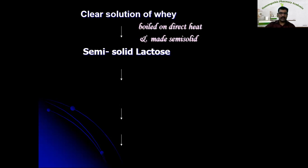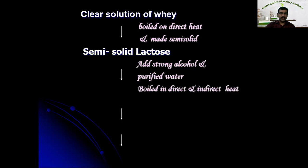To the semi-solid lactose, we add strong alcohol and purified water for purification. It should be boiled first on direct heat and then on indirect heat — either in a water bath or any method that does not directly heat it. Once heated by adding strong alcohol and purified water, the semi-solid lactose is converted into solid crystal lactose.